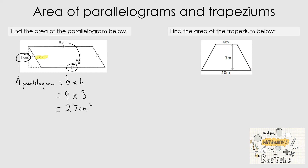Now, find the area of the trapezium. Starting with the formula: area of a trapezium equals one half multiplied by, in brackets, a plus b, multiplied by the height. Here, a and b are the two horizontal lines — a is 6 and b is 10 — and the height is 7. Substituting in: one half multiplied by (6 + 10), multiplied by 7.